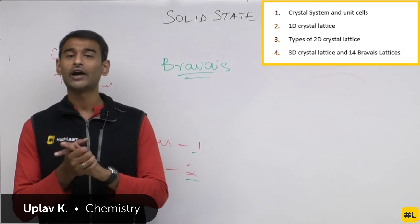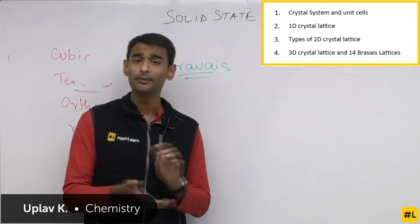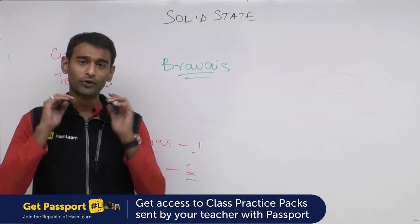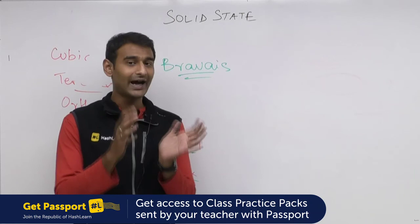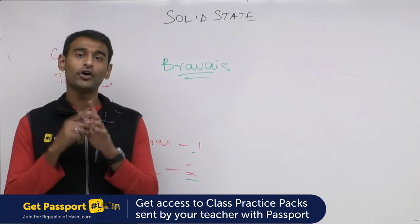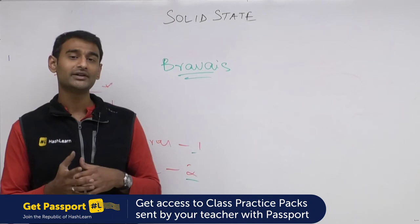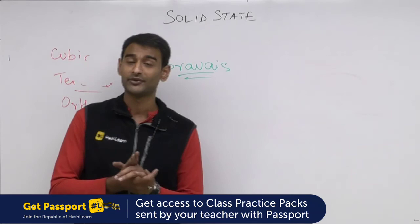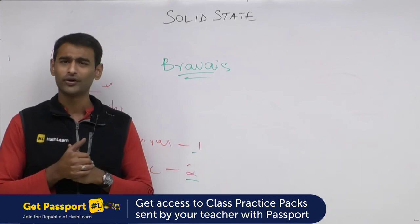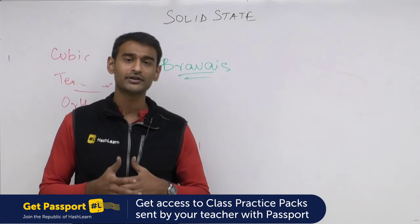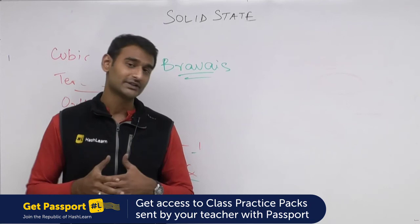I want all students to start answering the class practice problems right now. If most of you attempt, I will identify which question most of you get wrong and discuss it in tomorrow's class. In the next class we will be talking about nearest neighbors and the relationship between the radius of an atom and the edge length of a unit cell. See you in the next class — bye!